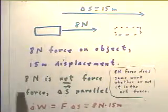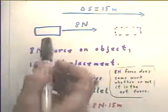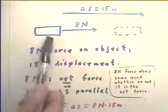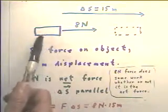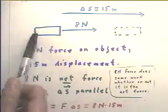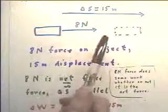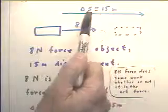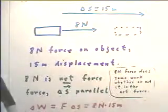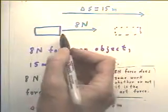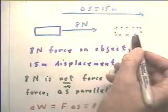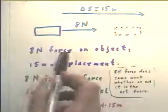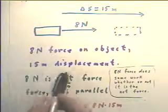The first problem we look at concerns some arbitrary object, could be a cart, could be an object we're moving, any object we're moving in some direction. We have a force, I mean a distance, or displacement of 15 meters. So we're going to move this object through a displacement of 15 meters with an 8-Newton force. We have an 8-Newton force on the object, a 15-meter displacement.